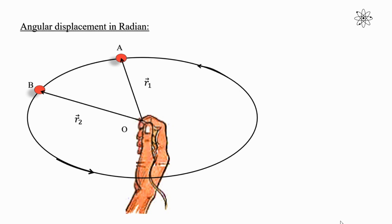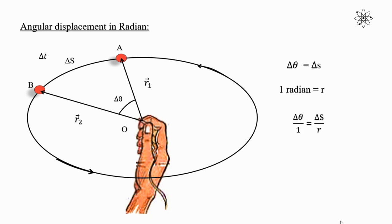Let's suppose that the object moves from position A to B in time delta T. An arc length delta S describes an angle delta theta at the center of the circle. So for delta theta, arc length is equal to delta S. But we know, for 1 radian, arc length is equal to radius R. So take the ratio of the two. We have delta theta divided by 1 equal to delta S divided by R. So delta theta is equal to delta S divided by R.